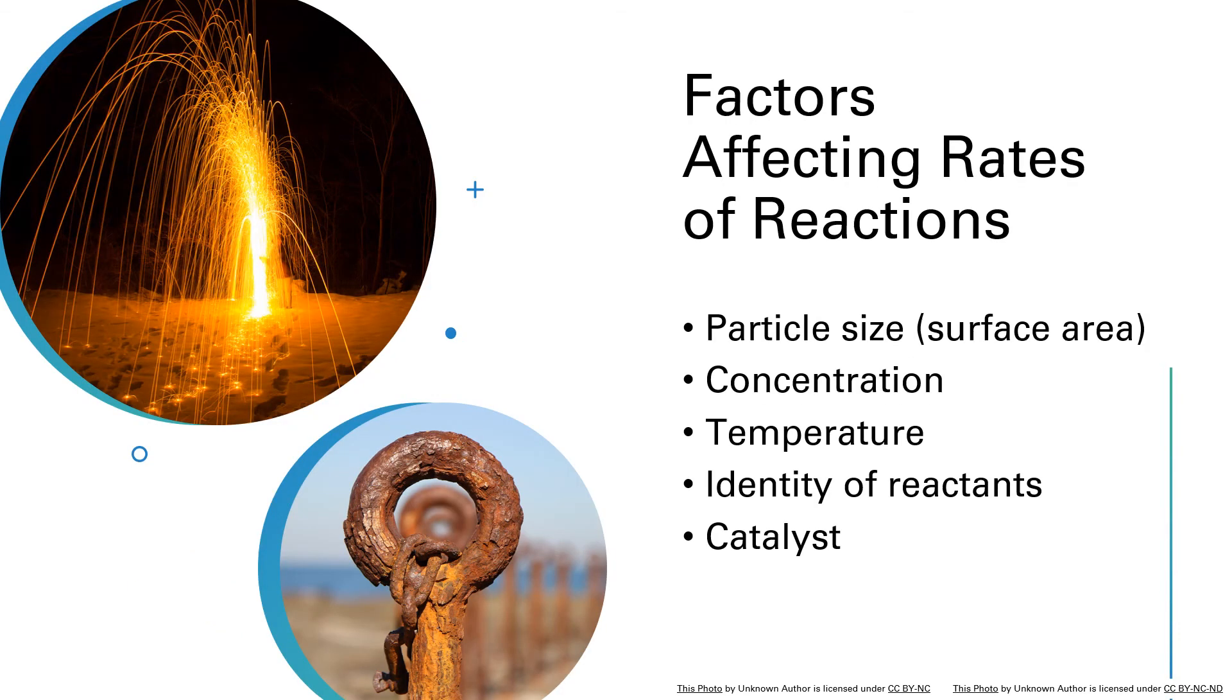The two illustrations on this slide show the same overall chemical reaction, but happening at very different reaction rates. The top image shows steel wool on fire and the bottom image shows steel that has rusted. Both of these reactions are the oxidation of iron. The one in the top diagram occurs very rapidly and the one in the bottom diagram occurs very slowly.